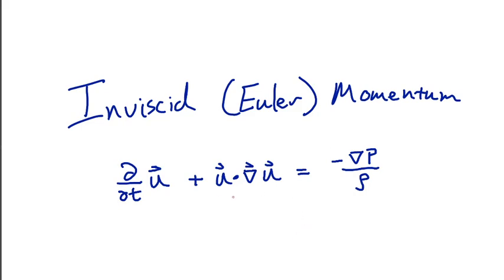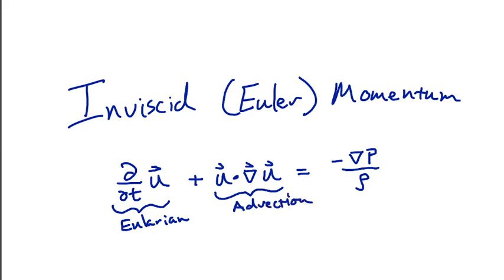So we've got this term — this is a derivative in time alone, a partial derivative with respect to time. We call this the Eulerian derivative with time. This term here represents advection — this represents flow u being carried by flow u operating on gradients of that flow. So this is the advection term: stuff being carried along by a large-scale flow. And then we've got the pressure gradient term. These really capture a lot of the key interactions of how a simple fluid operates.